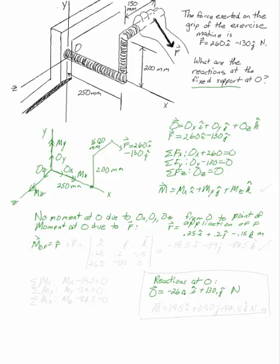The moment at O due to F is the cross product of that R and my F in Cartesian form. I, j, k. R goes on top, 0.25, 0.2, minus 0.15. F goes on the bottom. And you take that cross product and you get the moment at O due to F is minus 19.5i minus 39j minus 84.5k.